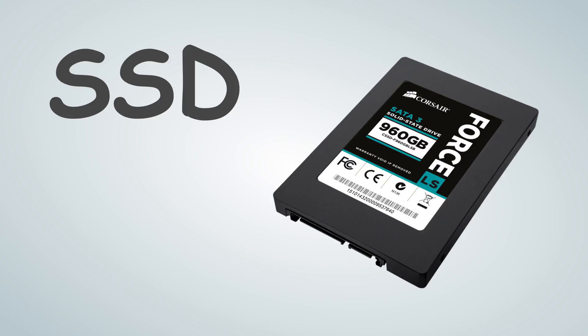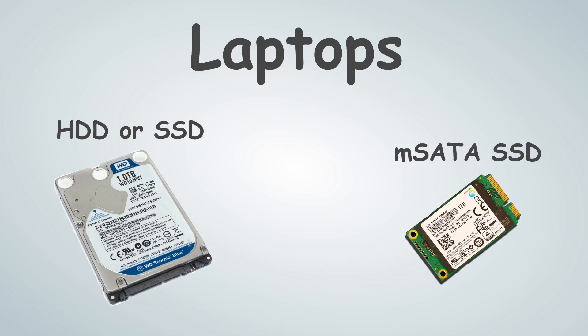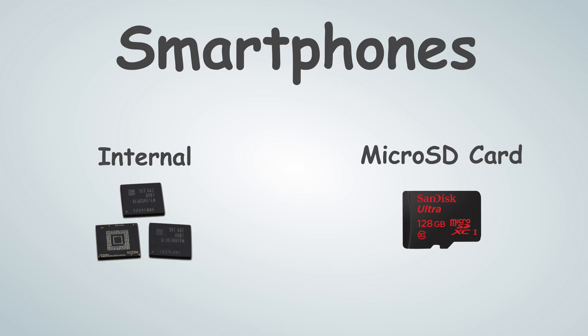So far we've only covered desktop computer hard drives. There's still laptop hard drives, which can be those with a spinning disk or solid state drives, or they can be another type called mSATA SSDs, which are much smaller. Then there are smartphones that have internal memory or a microSD card that you can add. Then you have cameras, game consoles, and every other type of device that needs any type of data storage, big or small.